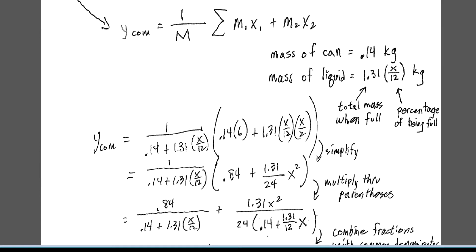In the problem, the mass of the can is given as 140 grams and the mass of the liquid inside is 1.31 kilograms when the can is full. If x is the level of the liquid and 12 is when it's full, then x over 12 is the fraction by which the can is full. Multiplying that fraction times the full mass gives the mass of the liquid when the top of the liquid is at position x.